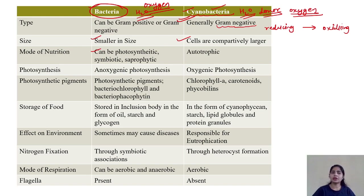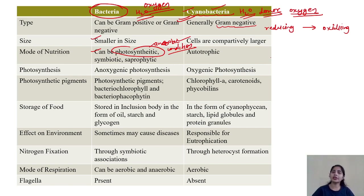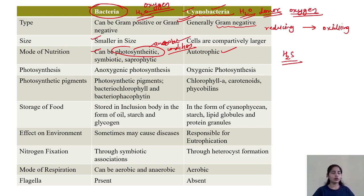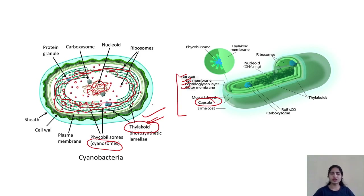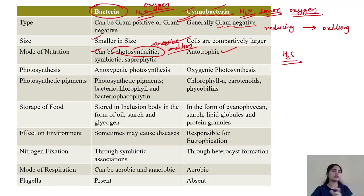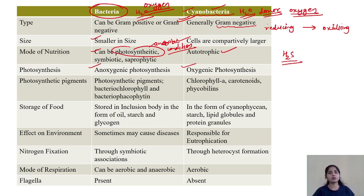Bacteria can be photosynthetic, symbiotic, or saprophytic. If they are photosynthetic, it is always under anaerobic conditions — they trap energy directly and produce ATP, and the electron donor molecule can be hydrogen sulfide, not water. But cyanobacteria are autotrophic — they synthesize their own food by trapping energy using phycosomes. Their photosynthesis is oxygenic, performed in aerobic conditions using chlorophyll. Bacteria perform anoxygenic photosynthesis, while cyanobacteria perform oxygenic photosynthesis.